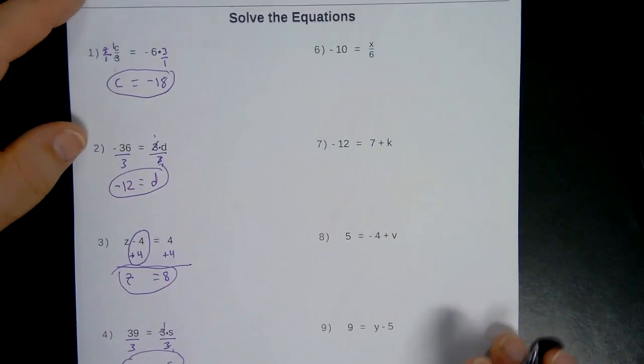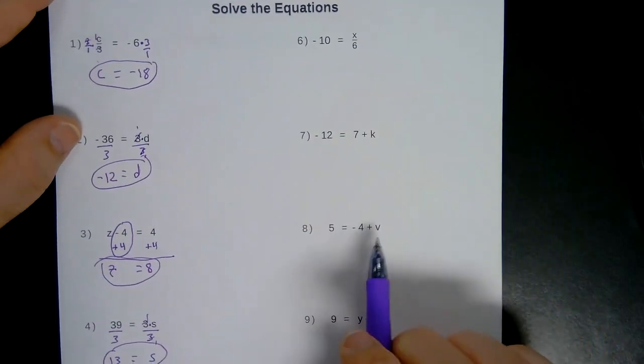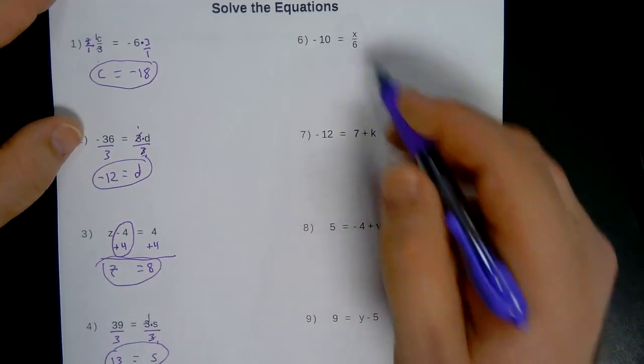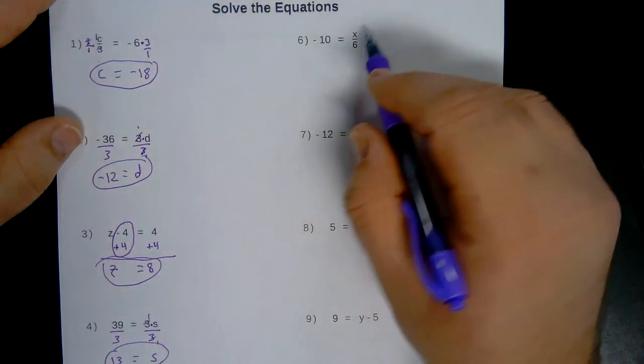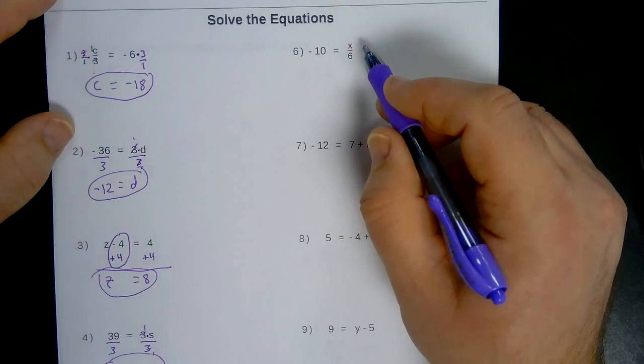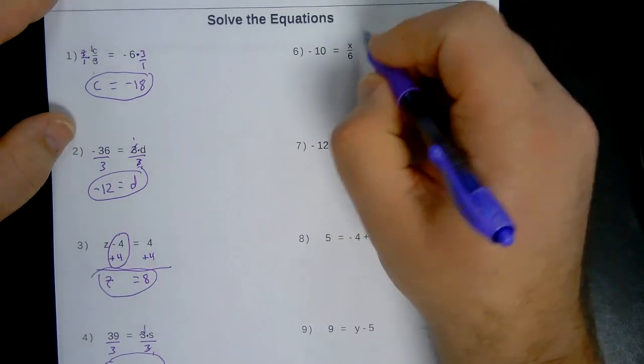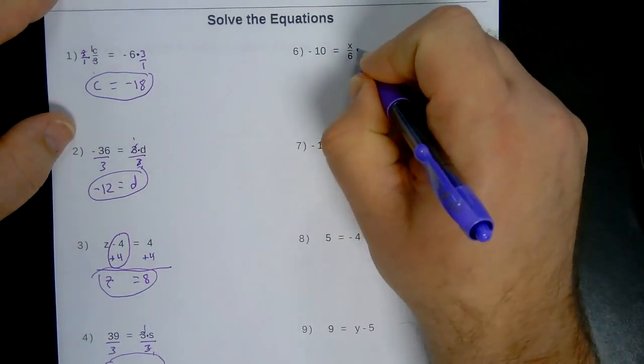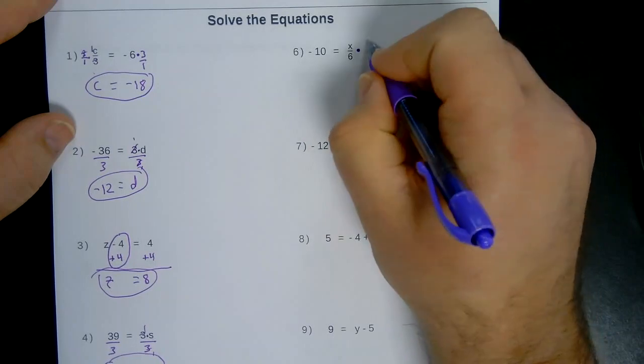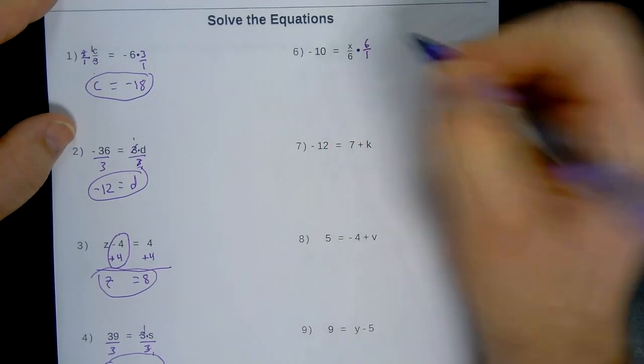And let's do one more. Let's see, we'll do a couple more. Like number 6 here. This is X divided by 6. So the opposite of division is multiplication. So the 6 is on the bottom. So I want to multiply the top by 6.